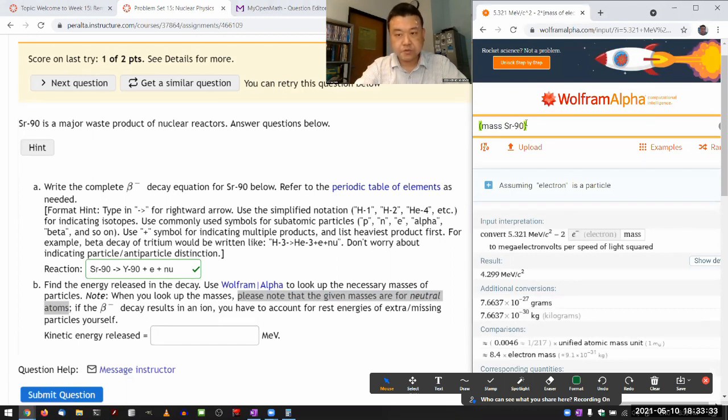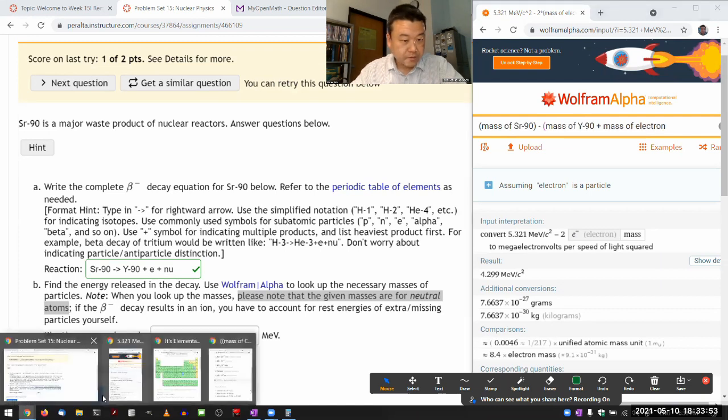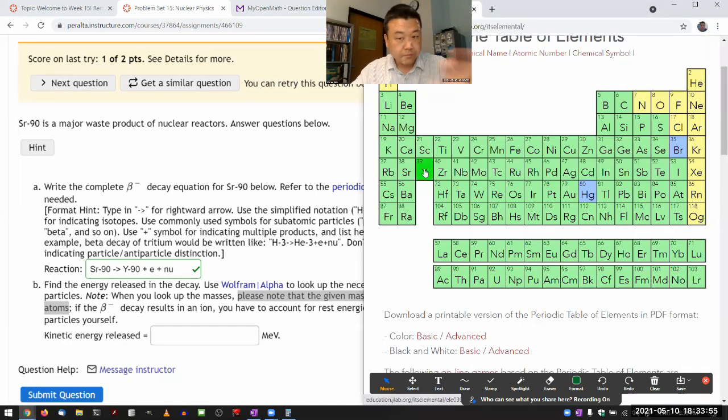And then I'm going to add a mass of electron. Because if I simply say mass of yttrium, that only includes how many electrons? Yttrium is 39.